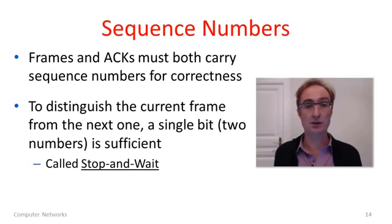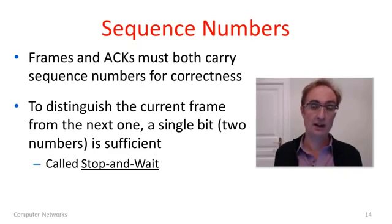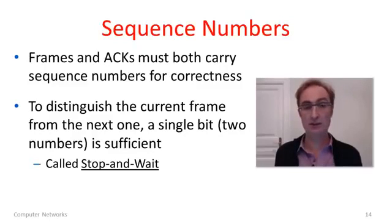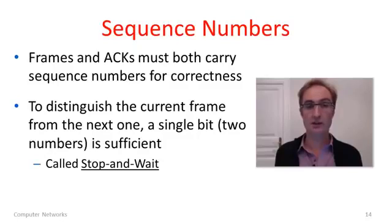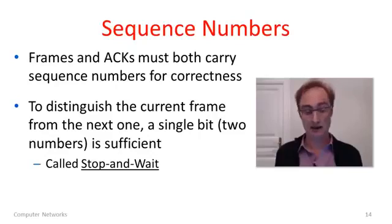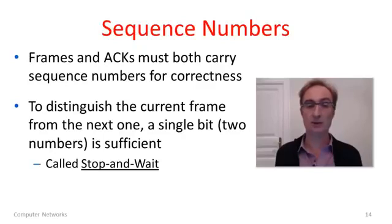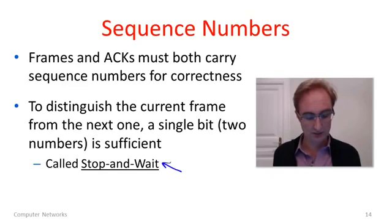We need to fix this problem to ensure the retransmission mechanism is correct. It turns out that both frames and acknowledgements must carry sequence numbers. We check sequence numbers at the receiver to make sure we've got the right frame and the protocol is operating correctly. In the protocol where the sender sends only a single frame at a time and resends until it gets through, we only need a single bit — indicating two states — to distinguish the current frame from the next one. This protocol is called stop-and-wait.